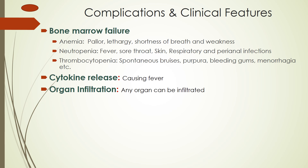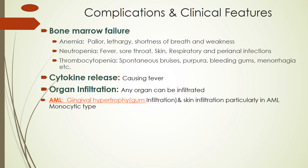In thrombocytopenia, when platelets are decreased, there are spontaneous bruises, purpura, bleeding gums, menorrhagia, etc. Cytokine release causes fever — this is unexplained fever which may or may not be linked with infection. Organ infiltration: any organ can be infiltrated depending upon the type of leukemia. In AML, the gingiva (gums) hypertrophy because blast cells infiltrate this area. Blast cells also infiltrate the skin, particularly in AML of monocytic type.